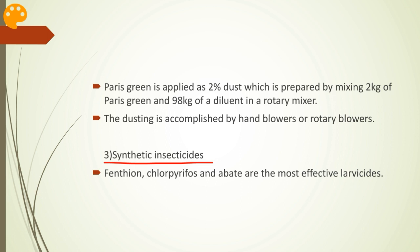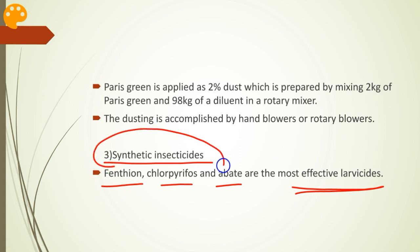Synthetic insecticides consist of fenthion, chlorpyrifos, and abate. These are the most effective larvicides, but they are not recommended for larviciding operations because of their long residual effect and water contamination. There is also an increased risk of developing resistance in vector mosquitoes, so these synthetic insecticides are mostly not used widely.